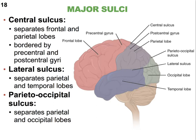This slide also shows some of the major sulci you're responsible for. We have the central sulcus, which we'll use as a major landmark — it separates the frontal lobe from the parietal lobe. You also have the lateral sulcus, which follows the superior contour of the temporal lobe, and the parieto-occipital sulcus, whose name clearly tells you where it is located.